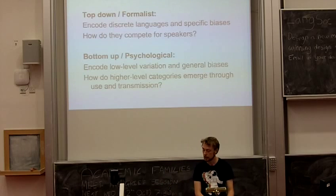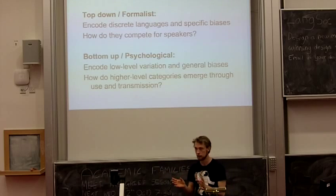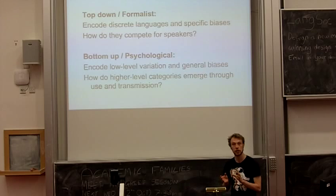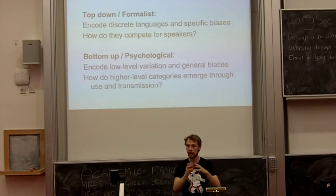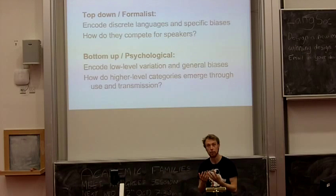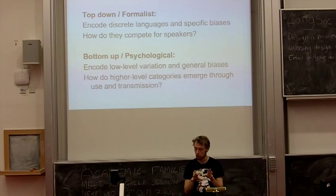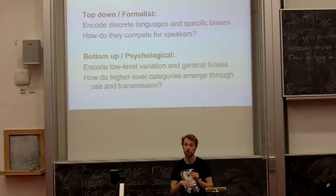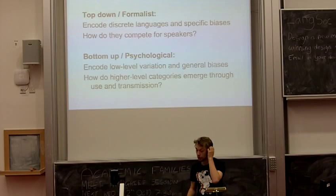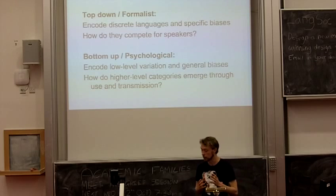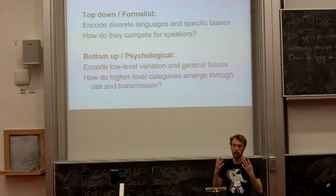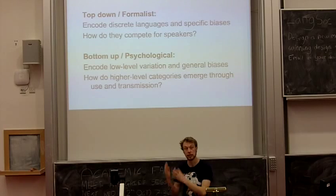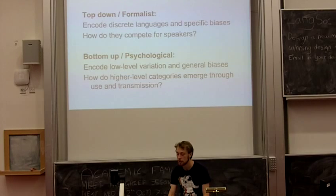This really splits the field into two approaches. The first approach encodes discrete languages and language-specific biases in a model, then sees how they compete for speakers — you have fixed languages and an agent that decides which one to speak. The opposite approach takes a bottom-up or psychological view: encode low-level variation — words or phonemes — and general learning biases, not language-specific ones. Then ask how higher-level categories like a language emerge through use and transmission. Now we're studying not just how the proportions of linguistic variants change, but also how their structure changes over time. I think that's the way forward, and this is the work I'm trying to do now. Thanks.